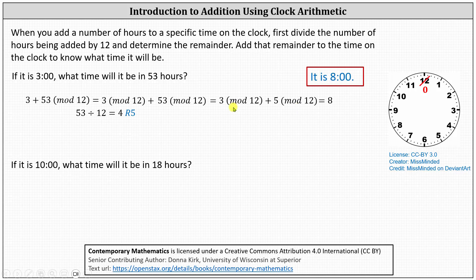This method tends to resemble using the actual clock to find the sum. For example, for 3 o'clock, the hour hand points at 3, and now we need to count 53 hours later. Four complete rotations from 3 o'clock would be 48 hours later. So there's 12, 24, 36, 48, and then we count to 53 from here. So 49, 50, 51, 52, 53, and it's 8 o'clock.